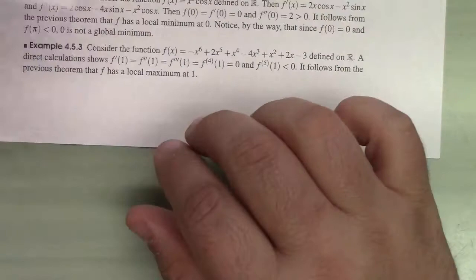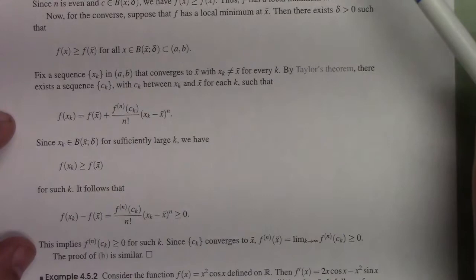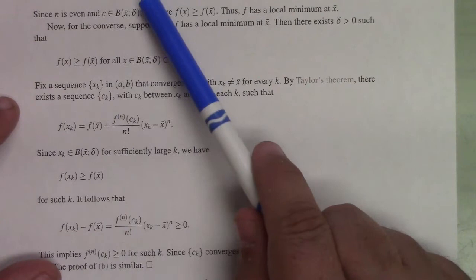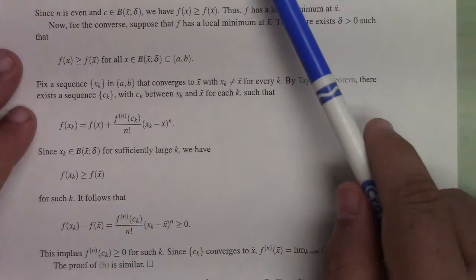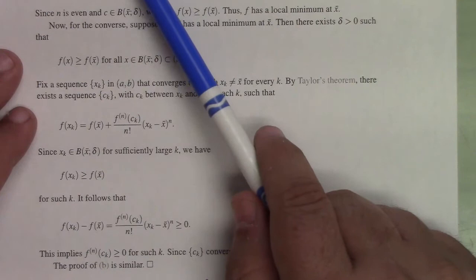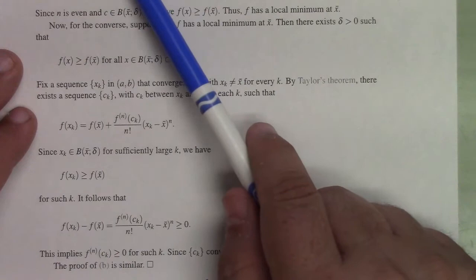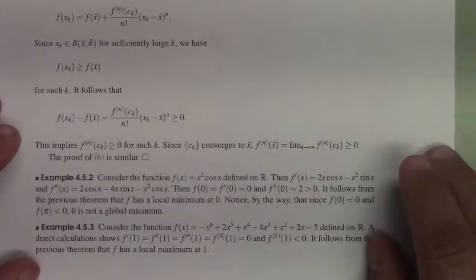The proof of the extended derivative test rests simply on the existence of the Taylor expansion. The argument is: the function looks like the Taylor polynomial, but everything in it is gone except for the nth term — the first non-zero one. If you're close enough to the point in question, the sign of that nth derivative determines whether you have a minimum or maximum. The other direction of the proof uses a sequential argument.